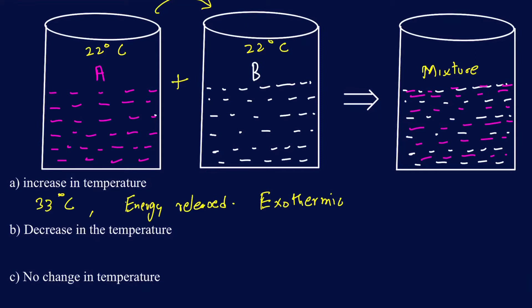On the other hand, if after mixing A and B the temperature decreases — suppose it went all the way to 15 degrees Celsius — then the reaction of A and B required some energy. That energy came from the solution those reacting species A and B were in. Since the energy was grabbed from the solution, the temperature of the solution went down. So it's going to be an endothermic process.